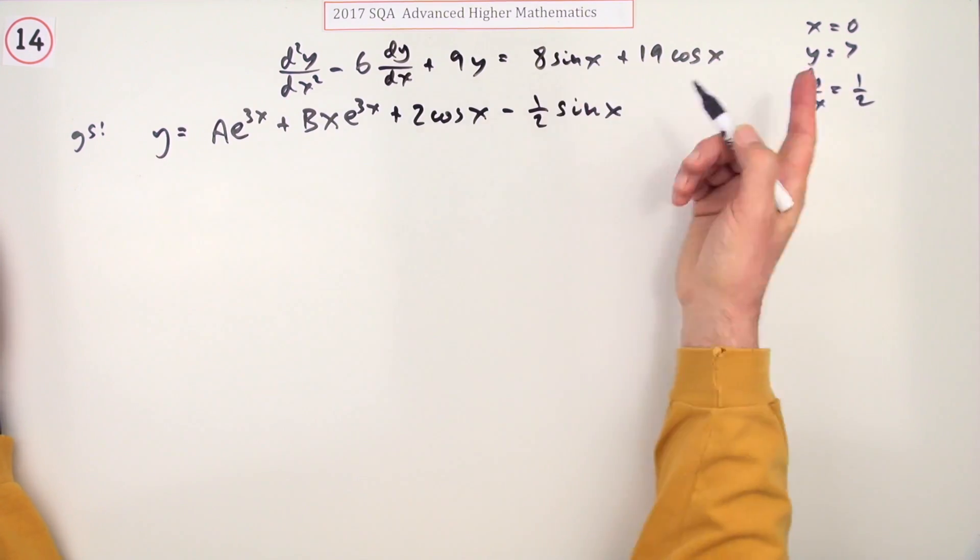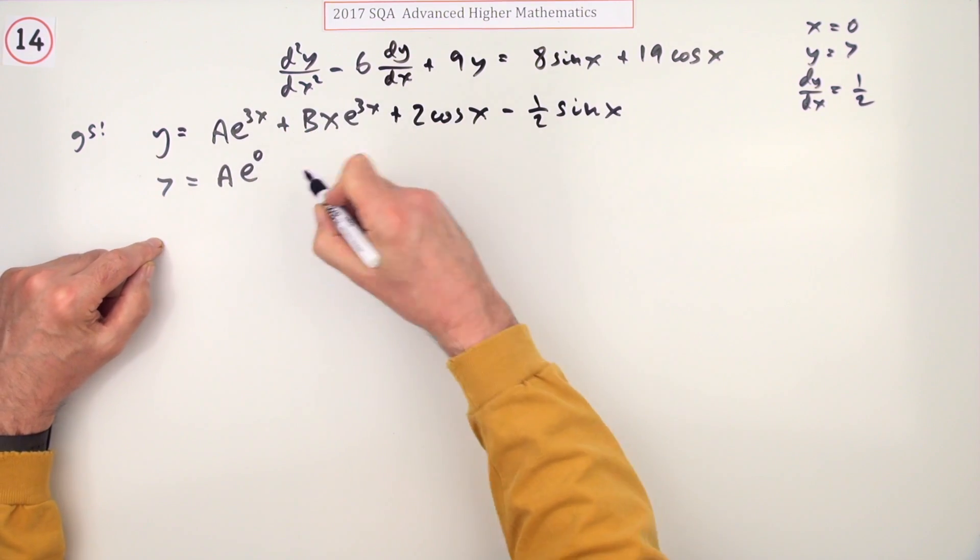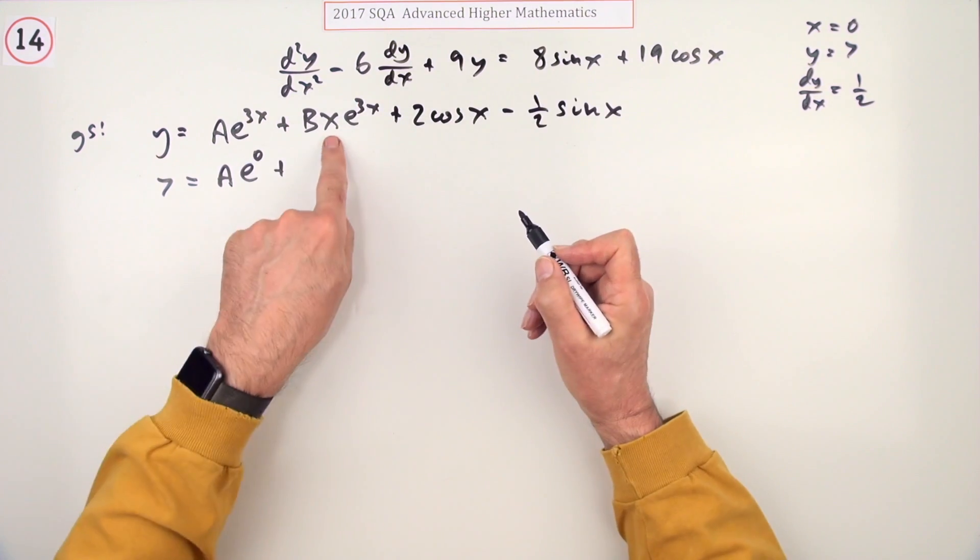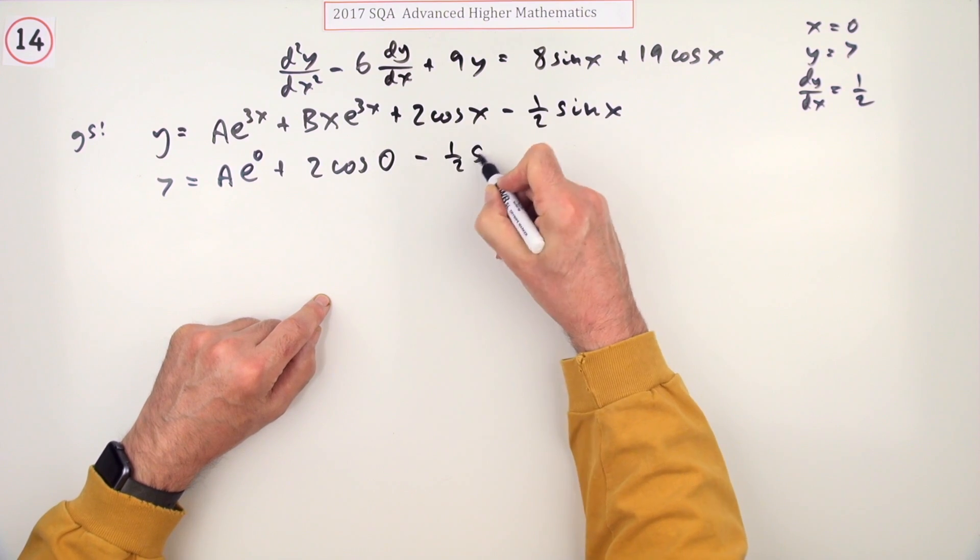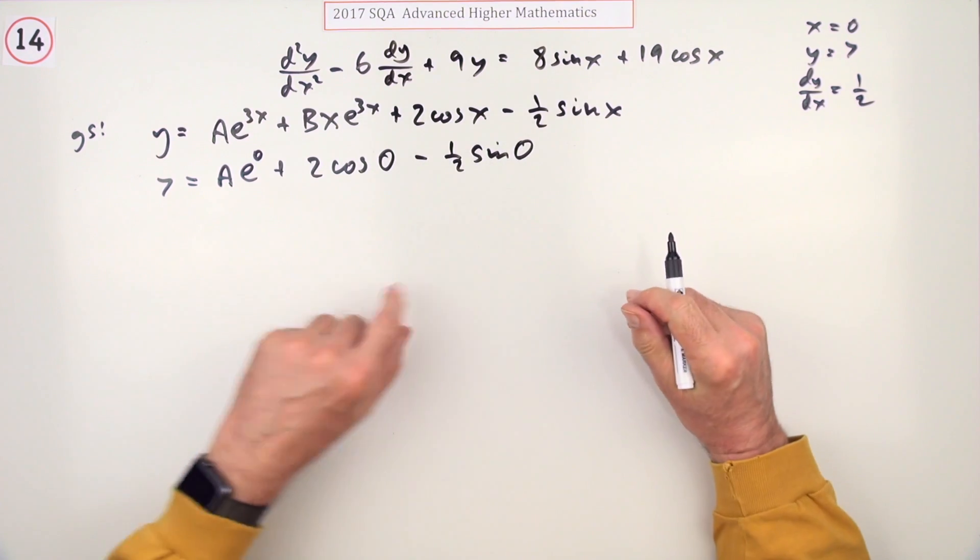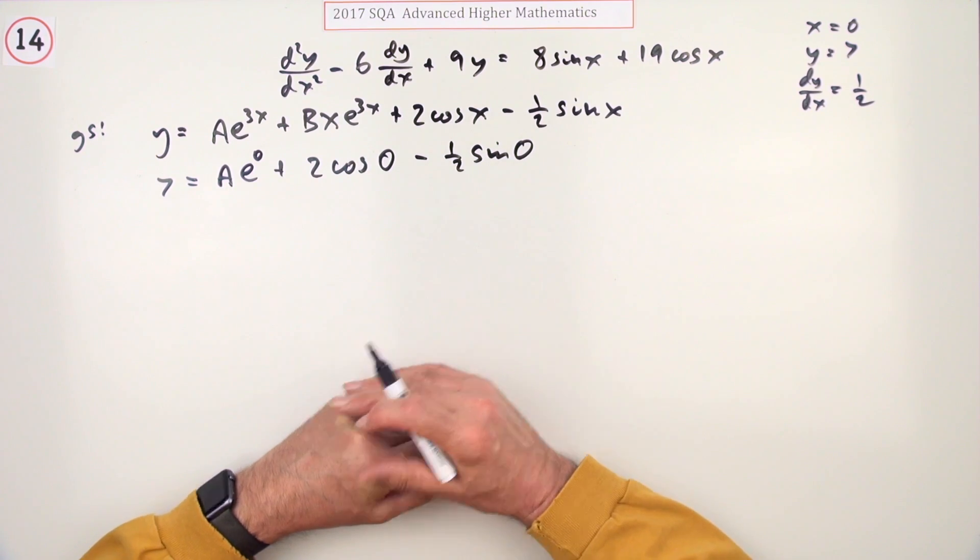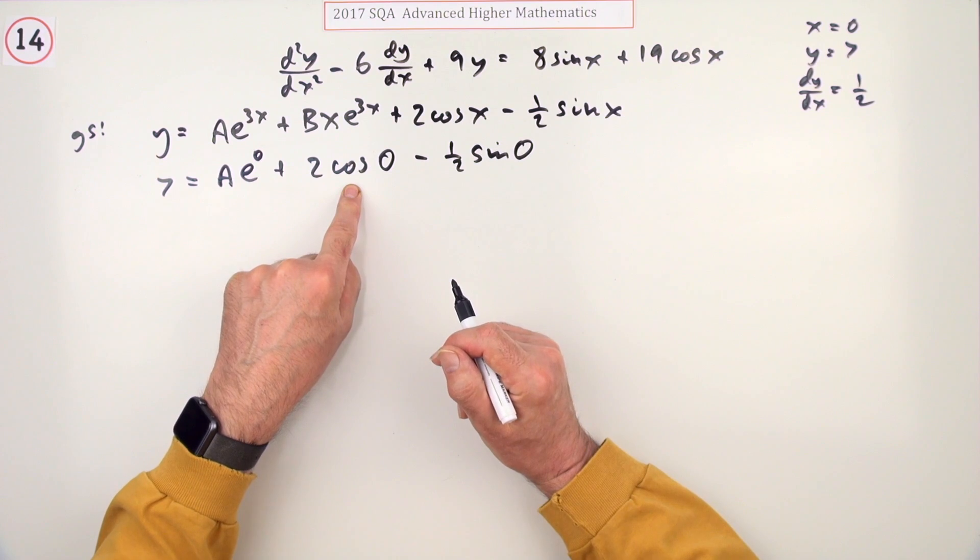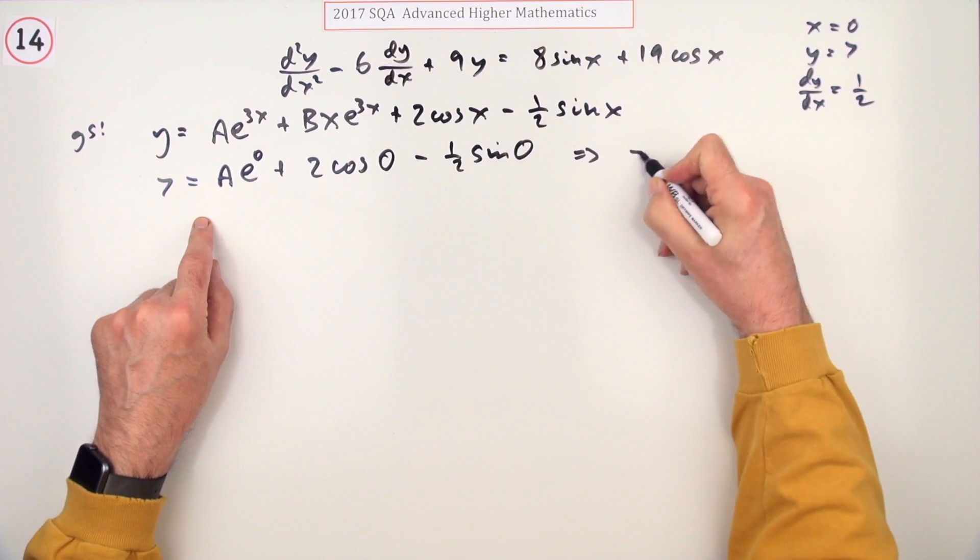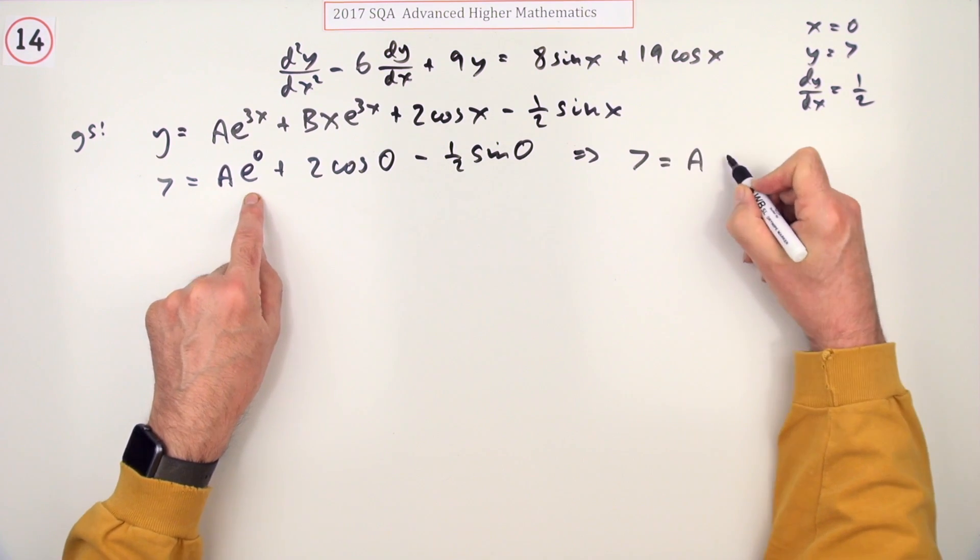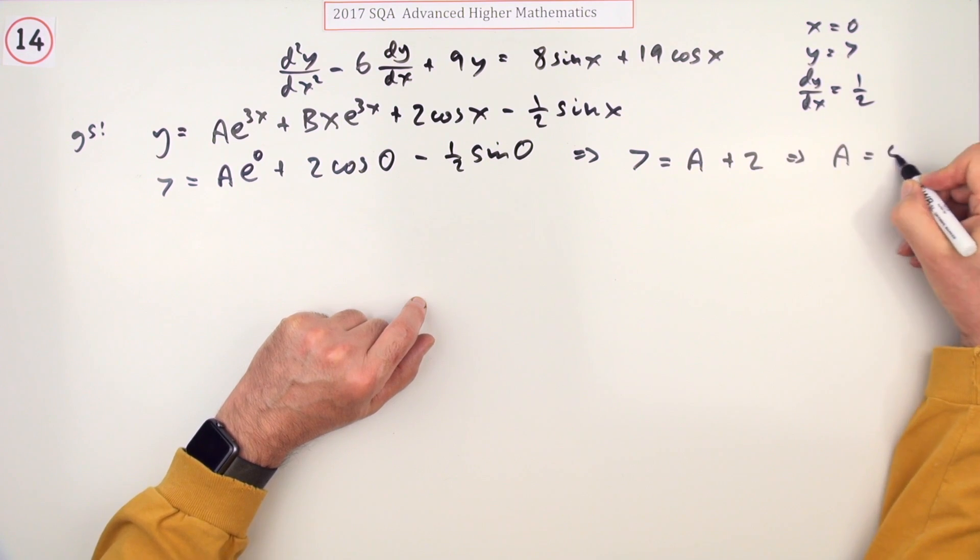If x is zero, y should be seven, so make all the x's zero. That's e to the zero plus that term's going to disappear with x being zero, plus 2 cos zero minus a half sine zero. What am I left with? 7 equals A plus 2, which means that A is 5.